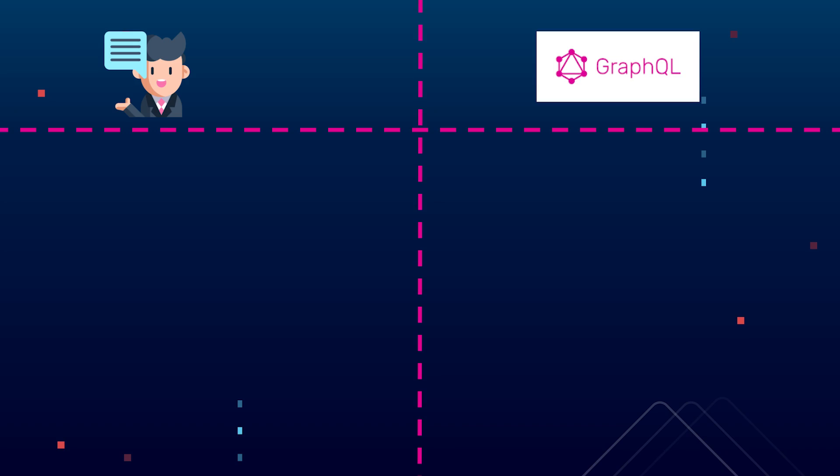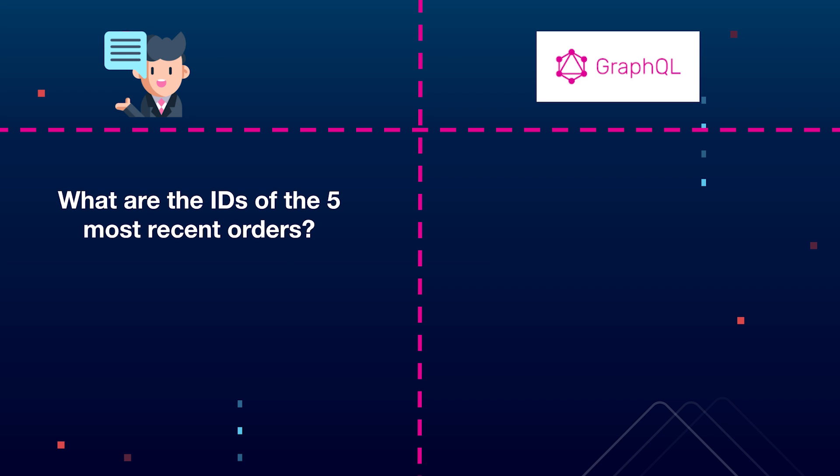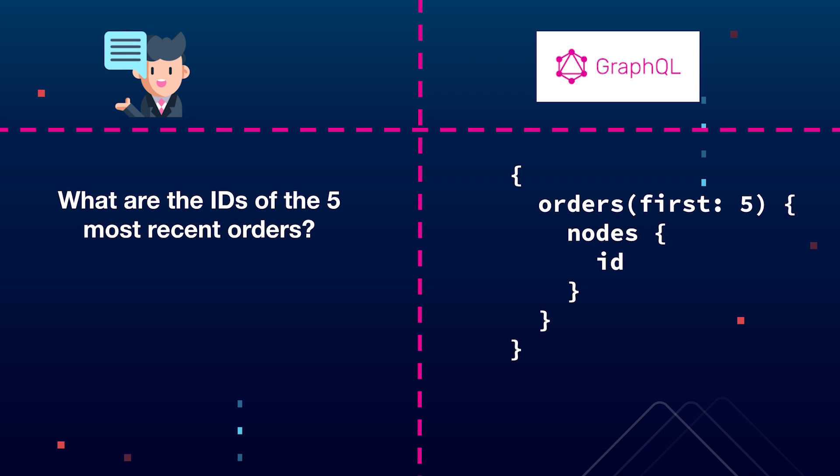GraphQL is the language that we can use to tell the API what we would like to do. As an example, we could request the IDs of the five most recent orders, and in GraphQL, that would translate to the following. When it comes to working with the Shopify API, there are two distinct operations that we can make in GraphQL that you should know of.